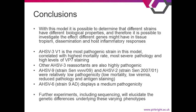So what can we conclude? In this IFNAR knockout model, the different strains display different biological properties, meaning we can investigate the effects different genes have on tissue tropism, dissemination, and host inflammatory response. AHSV-3 v1 is the most pathogenic strain — it has the highest mortality rate, the most severe pathology, and the highest levels of VP7 staining. The other AHSV-3 reassortants are also highly pathogenic. AHSV-9 (Senegal VVV-09) and AHSV-2 were of relatively low pathogenicity — low mortality, low viremia, reduced pathology, and reduced antigen staining — while AHSV-6 sits somewhere in the middle. To take this further, I'm going to do sequencing to elucidate the genetic differences between strains and try to ascribe these differences to specific gene segments.